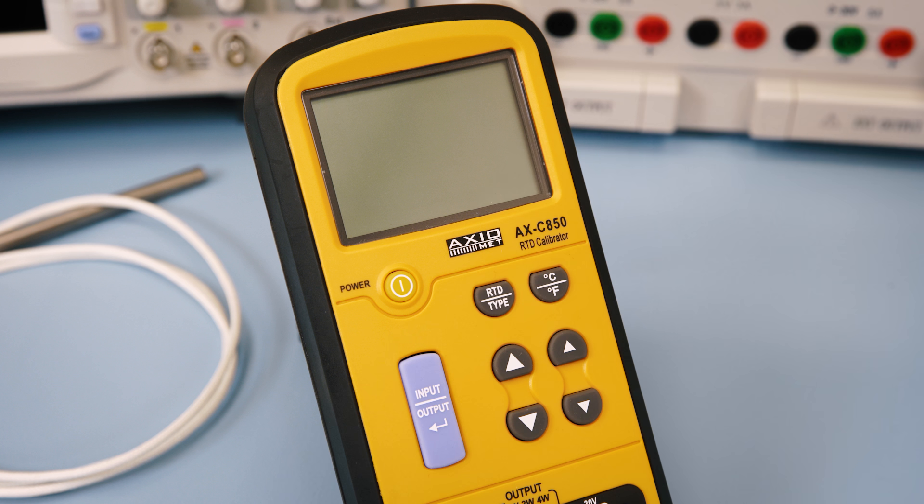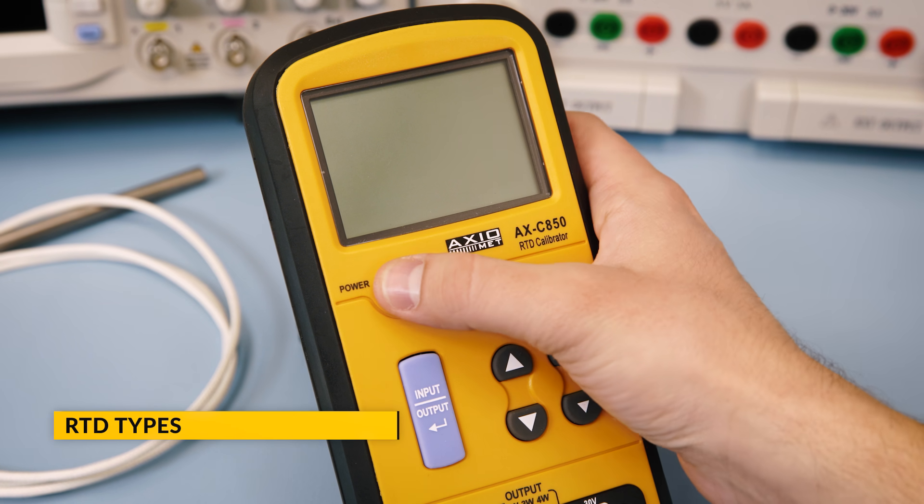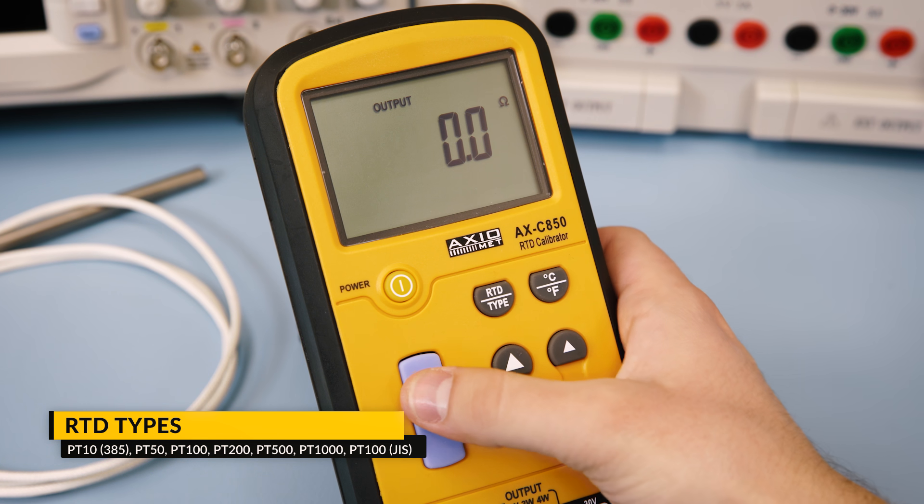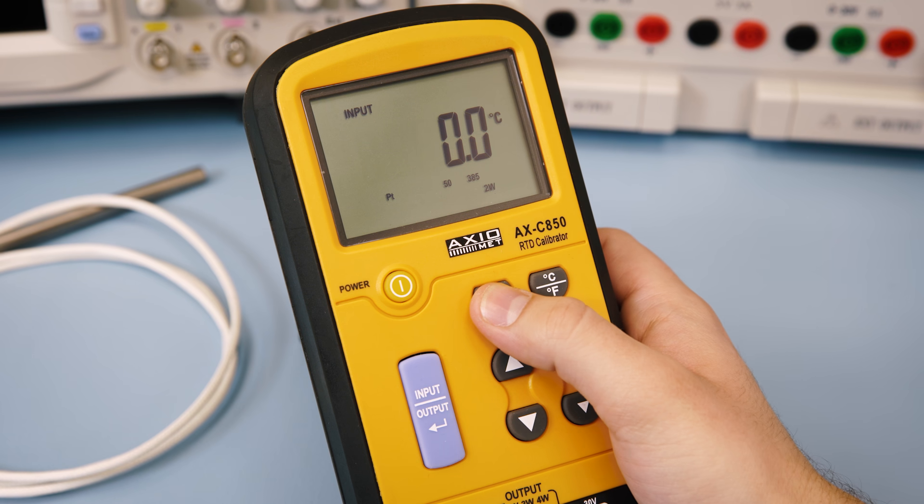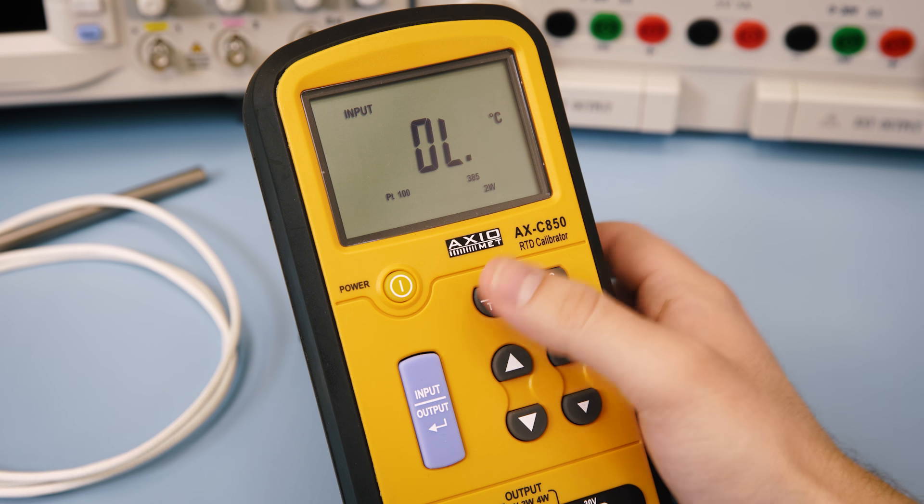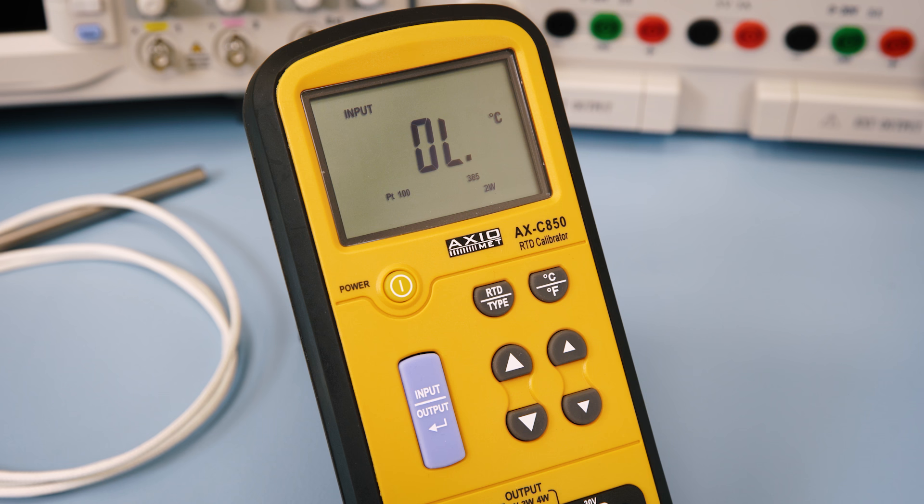The RTD calibrator can measure temperature with seven different RTDs as well as resistance. First, make sure that you are in the input mode, then select the type of the RTD by pressing the RTD type button. The type of the RTD is displayed below the main readings.